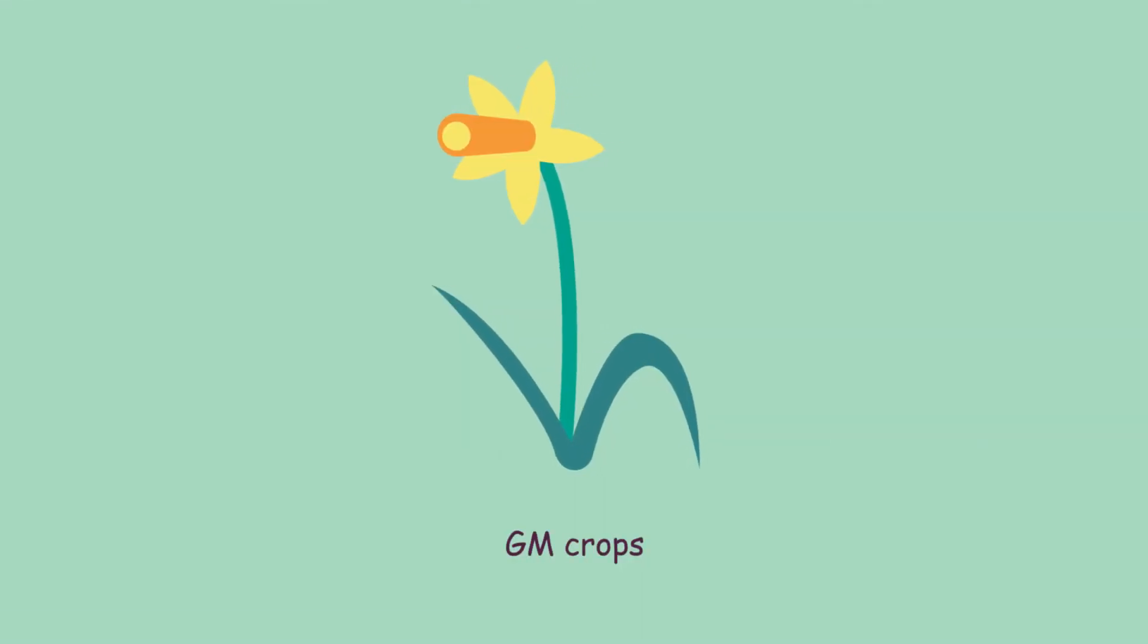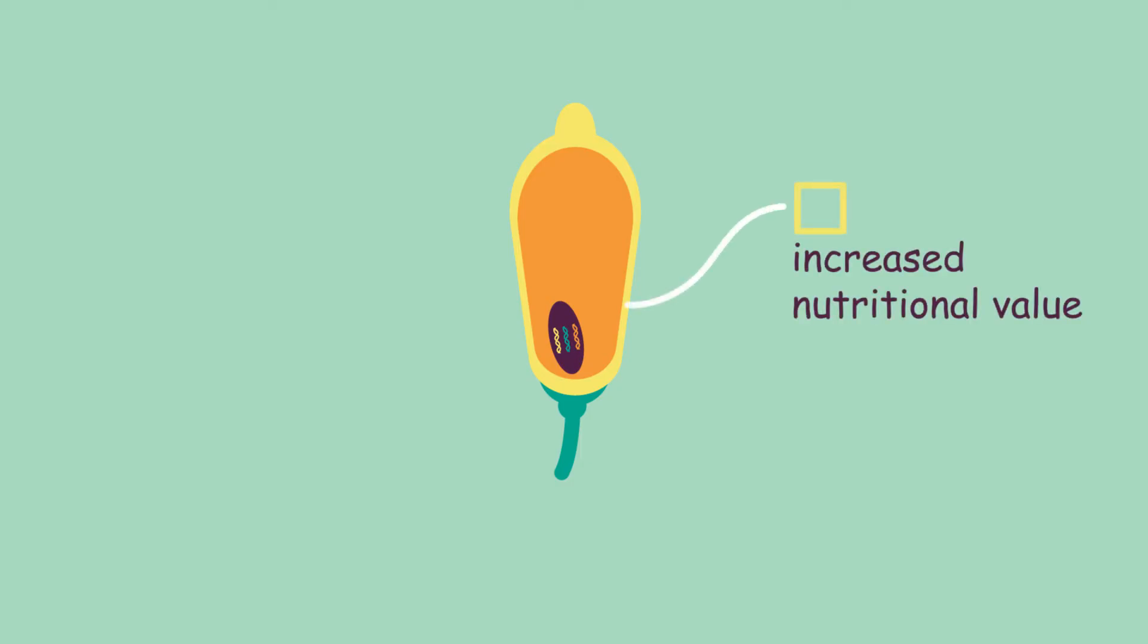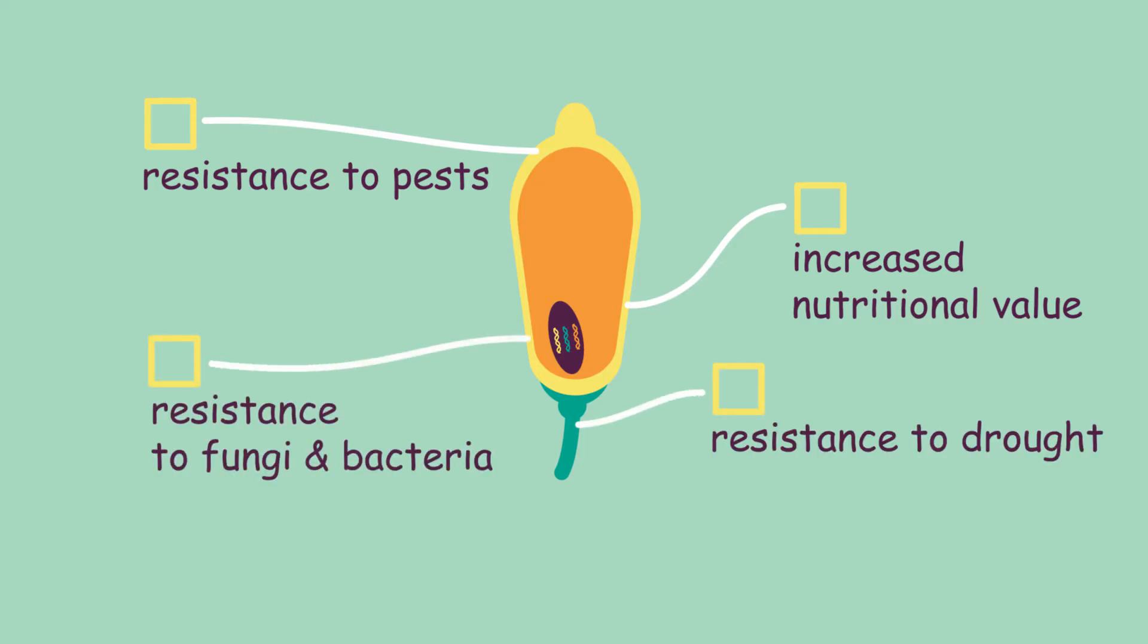GM crops are also an example of genetic engineering, whereby inserting genes from one organism into another can give a crop plant an added advantage such as increased nutritional value, resistance to pests, resistance to drought, and resistance to fungi and bacteria that cause rotting and decay, thus making the crop food last longer.